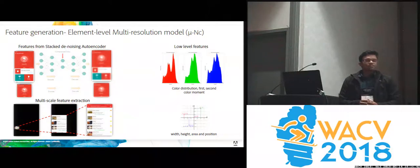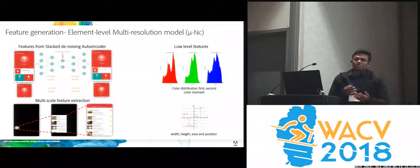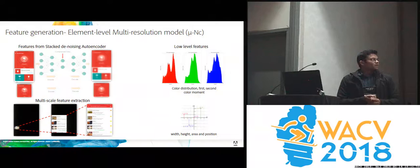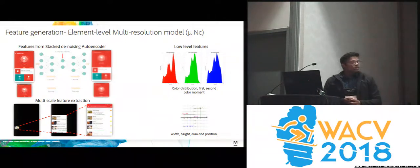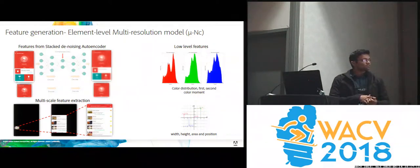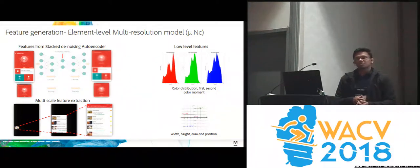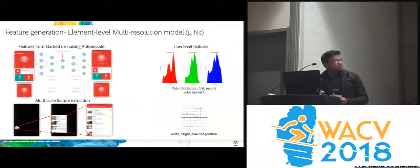Regarding our approach, the feature engineering consisted of using a stacked denoising autoencoder, where the autoencoder tries to reconstruct the image of an element from its corrupted version, and we use the output from the encoder. Since saliency is driven by visual contrast, we capture this phenomenon using features from increasingly larger scales of the UI elements, up to the whole UI itself. We also use low-level features like color distribution, size, and position of each UI element.